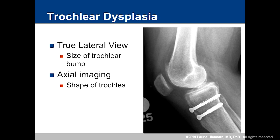For trochlear dysplasia, I insist on a true lateral x-ray in all my patients. You can see your alta there, but you can also look at the size of your trochlear bump. I always get axial imaging, either a CT or an MRI, so we can see the shape of that trochlea.